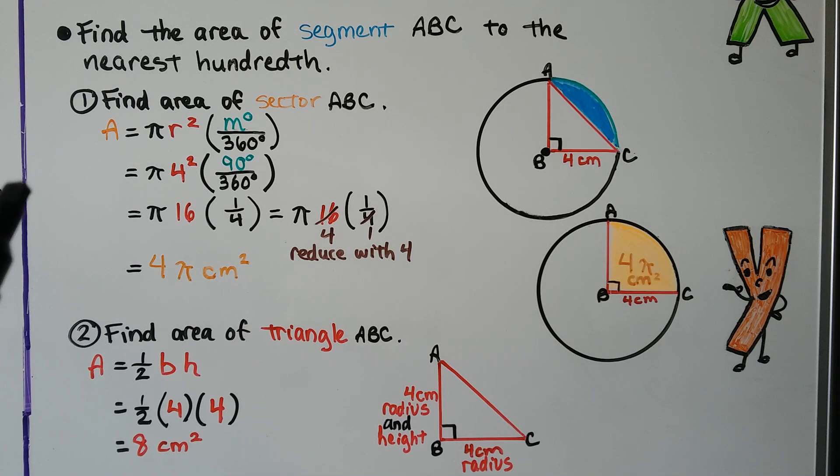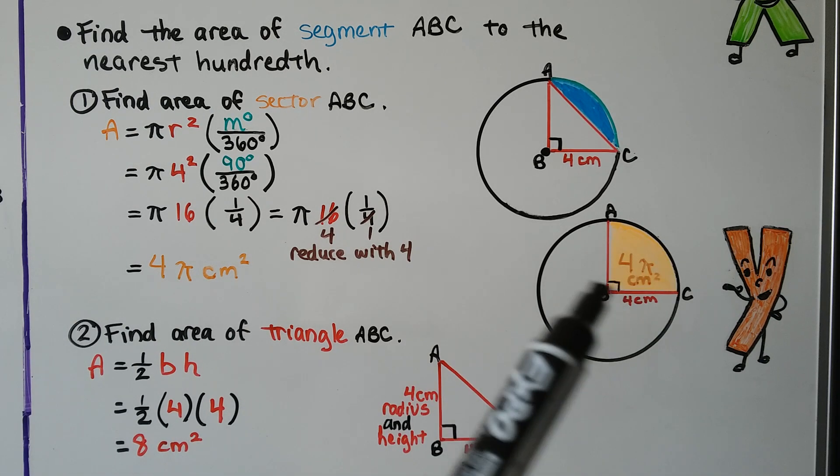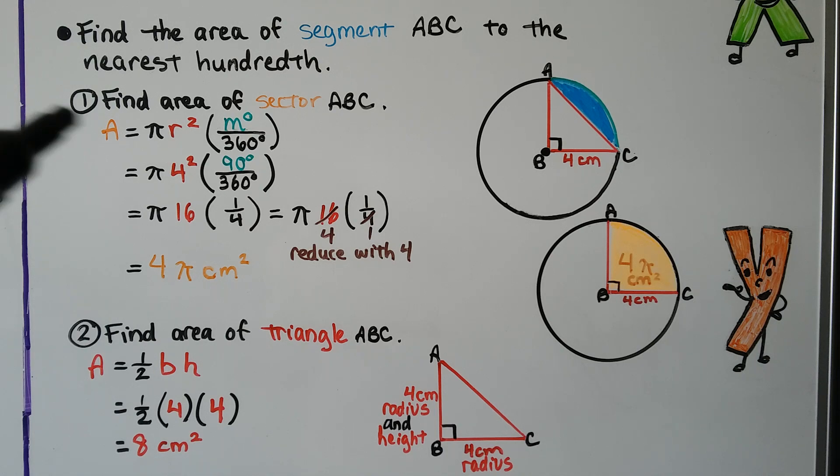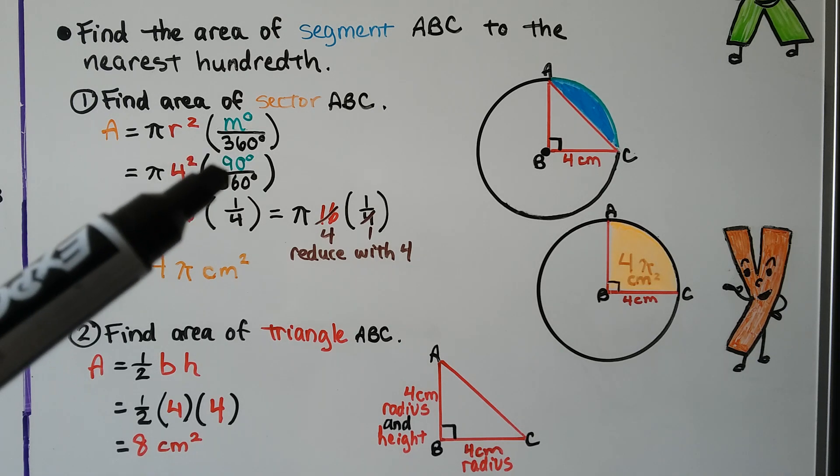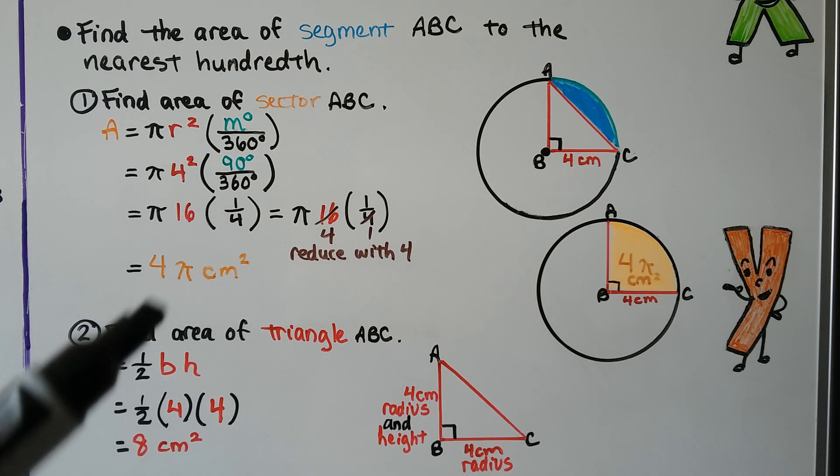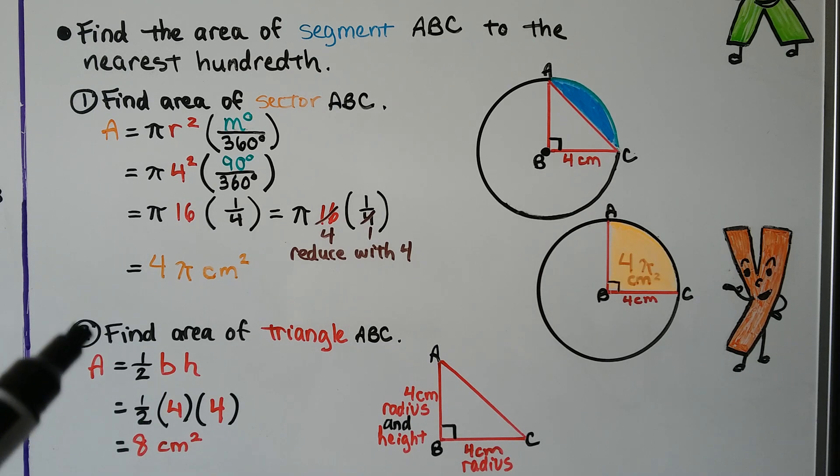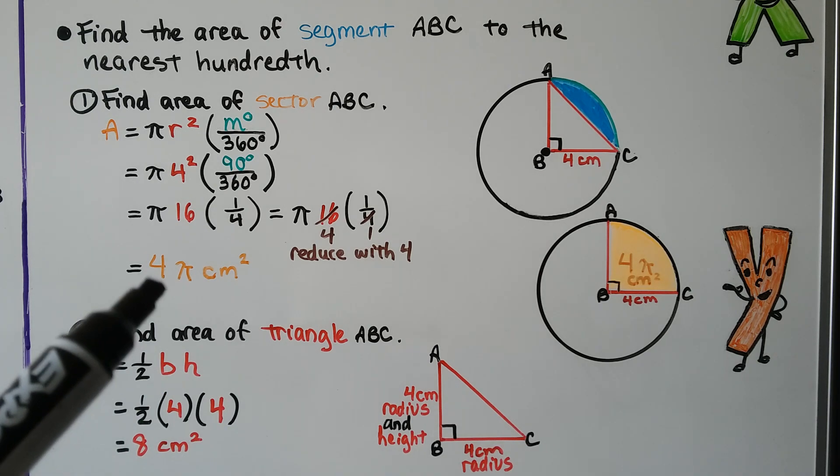We find the area of sector ABC, this orange area. We use our formula. We put the 90 for the M. We put 4 for our radius. We have 4 squared, that's 16. 90 over 360 is 1 fourth. We can reduce it with the 4 and we get 4 pi centimeters squared.